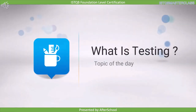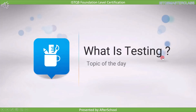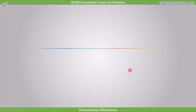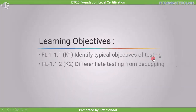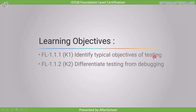In this lecture, we are going to understand what is testing. We have two learning objectives under this topic. The first objective is to identify typical objectives of testing, and it is marked as K1. That means questions will be direct and you need to remember each point. The second objective is to differentiate testing from debugging, marked as K2, which means you need to understand this topic. But before we start with these objectives, we shall understand what is testing.